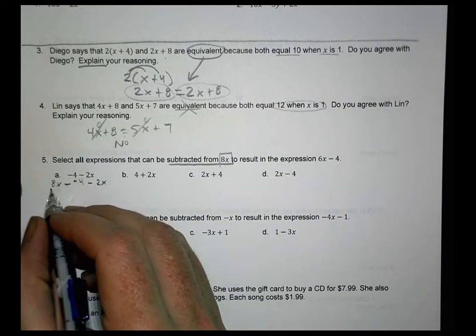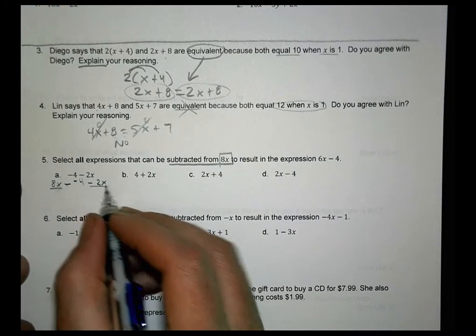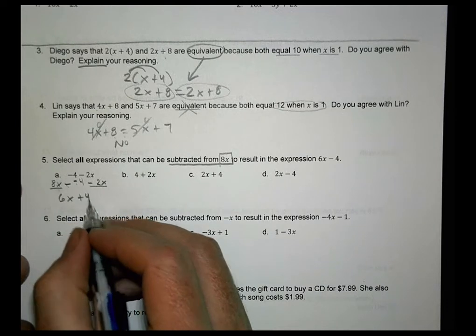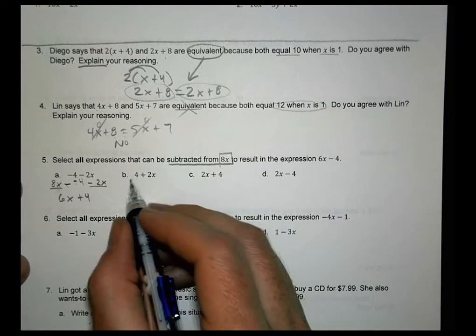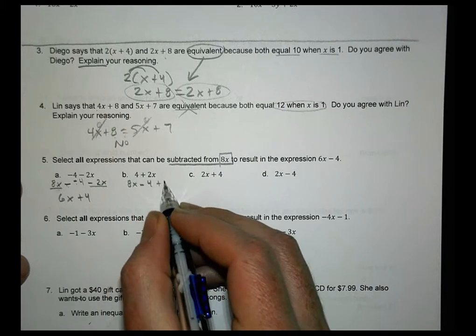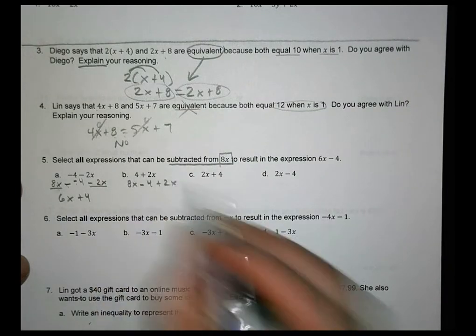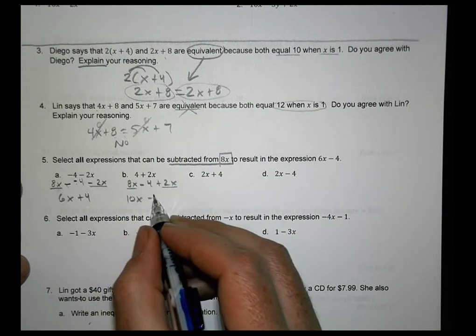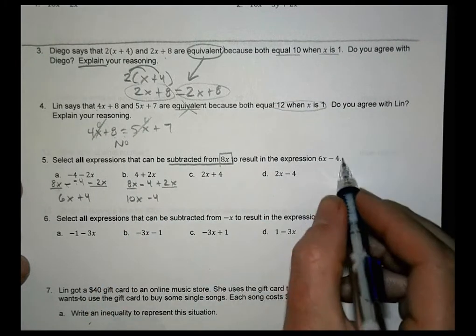So let me combine some like terms real quick here before I do all that stuff. I have the x's. I have an 8x and a minus 2x become a 6x. But a minus and minus becomes a plus 4. So I'd probably say no. On this next one, I can do 8x minus 4 plus 2x. Just writing out the way it's written there. Combining like terms, 8x and 2x is 10x minus 4. That's not the same as this one.